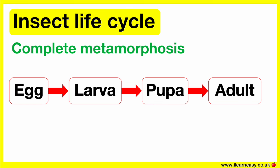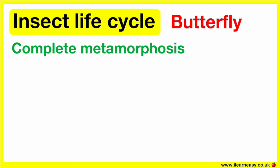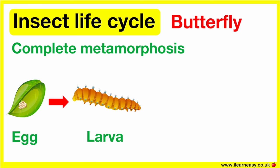The life cycle of a butterfly is an example of complete metamorphosis. This is because the butterfly in its larva stage looks completely different from when it becomes an adult. First, a female butterfly lays eggs on the leaves of a plant. Inside the eggs, a caterpillar begins to grow. This caterpillar is also known as the larva — the worm-like creature inside the egg.